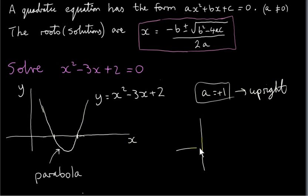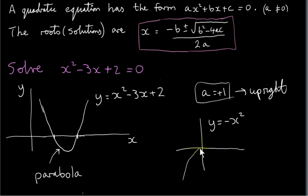If a was negative, we would get an inverted parabola. For example, if we look at the graph of y equals minus x squared — this is a quadratic function; there's no x term, there's no constant, but still it's quadratic because it has an x squared term — its graph is upside down, an upside down parabola. It actually crosses the x-axis at just one point, at the origin in this case. So when the coefficient of x squared is negative, we have an inverted parabola.